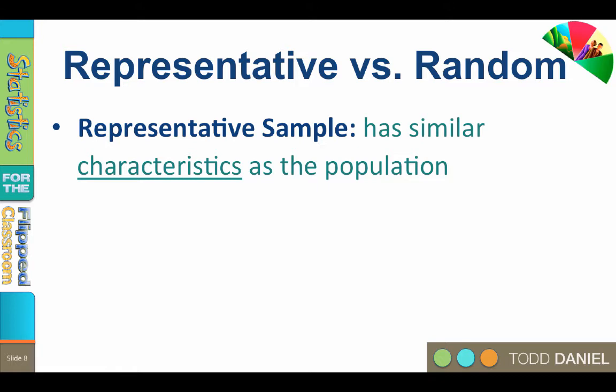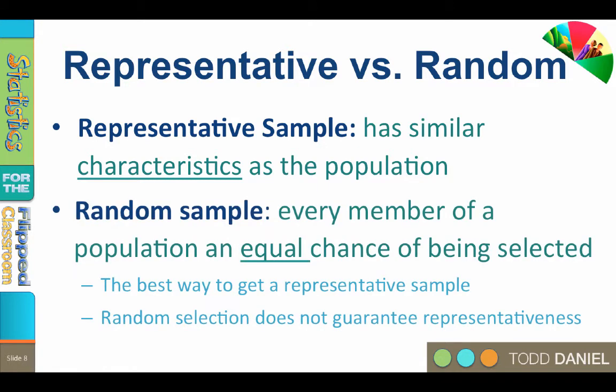The best way to get a representative sample is to use a random sample. However, a random sample does not guarantee a representative sample. A sample is random when every member of the population has an equal chance of being selected, randomly selected from a larger population of subjects.